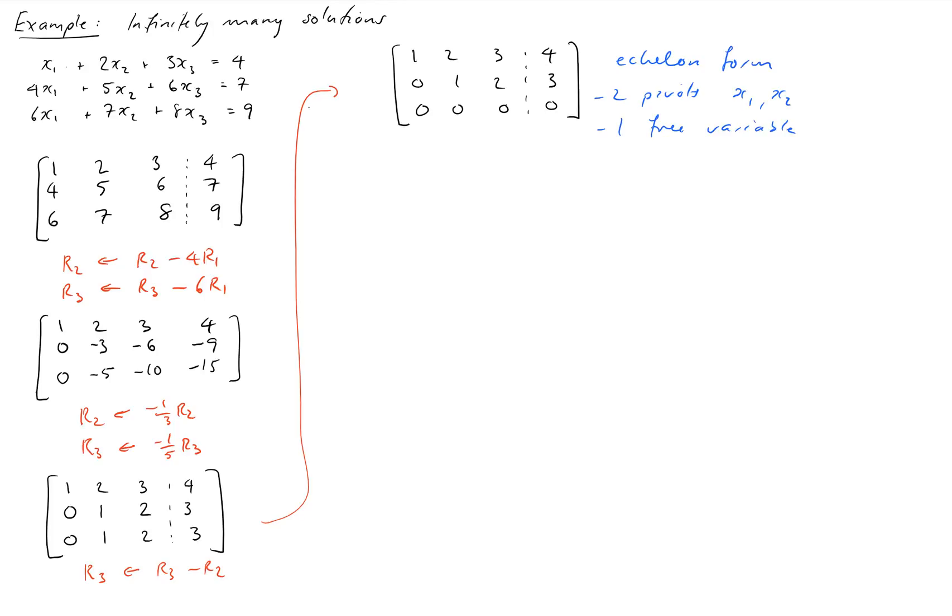So we're going to proceed to reduced row echelon form. In this case both pivots are already one so we don't need to do anything about that. We just need to get rid of the two above this one here.